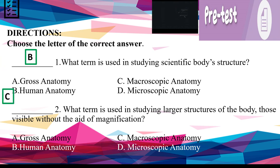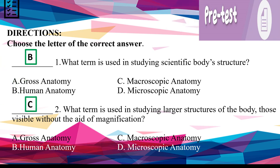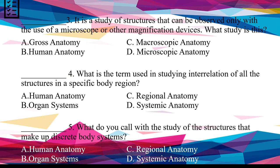If your answer is C, you got it right. Number 3: It is a study of structures that can be observed only with the use of a microscope or other magnification devices. What study is this? A. Gross anatomy. B. Human anatomy. C. Macroscopic anatomy. D. Microscopic anatomy.